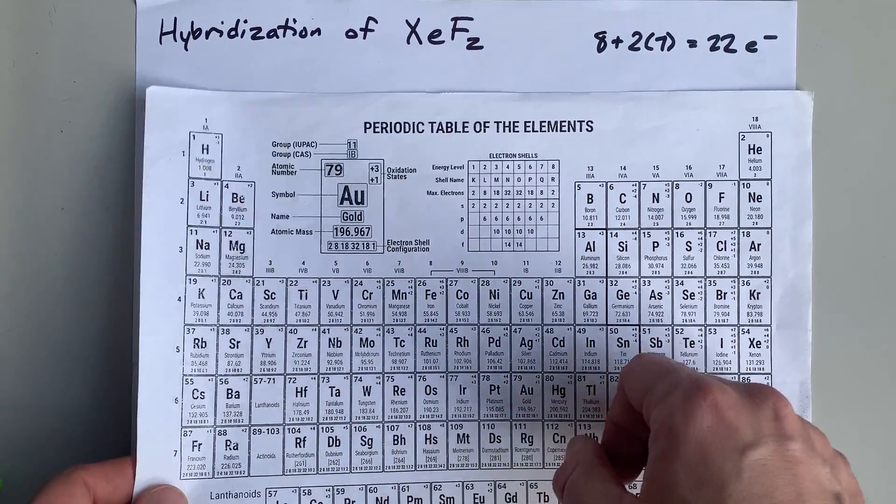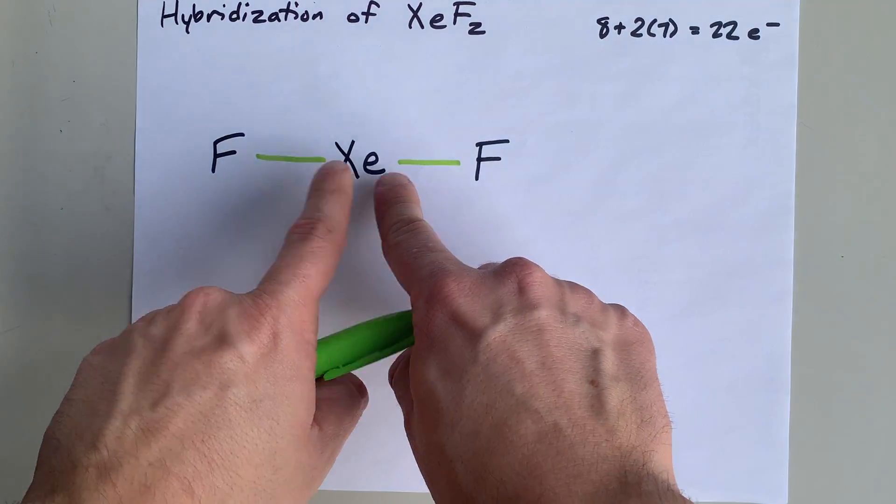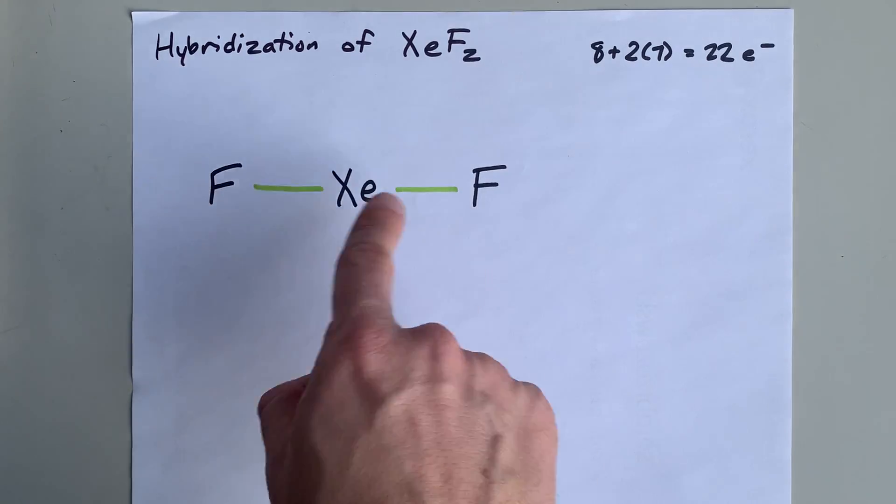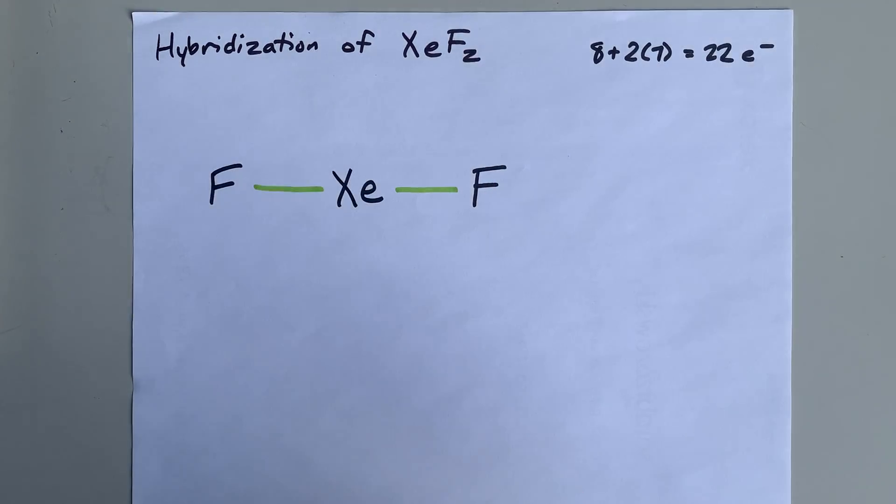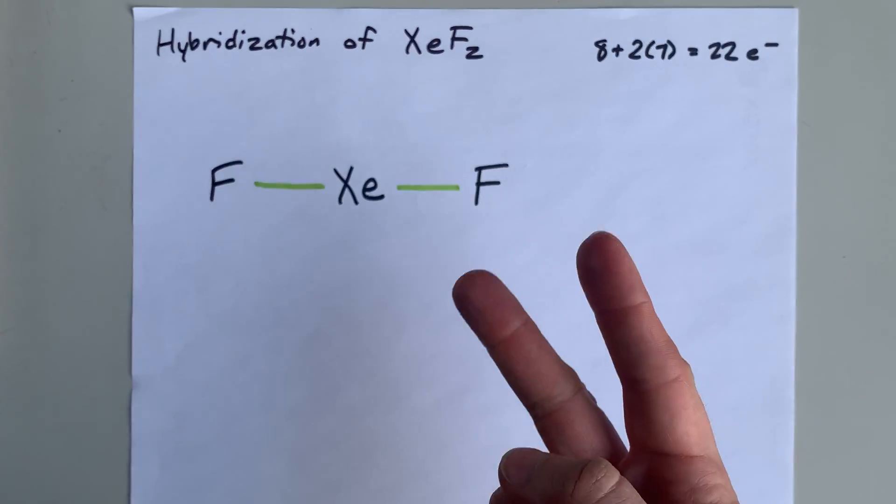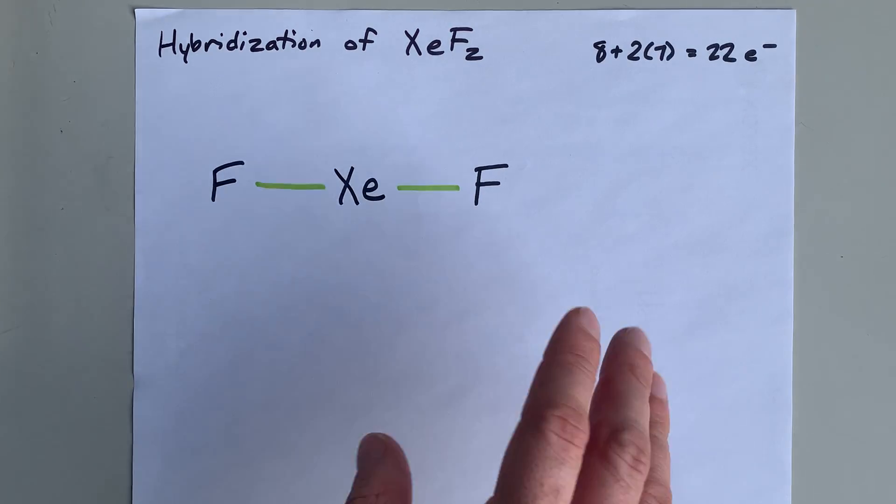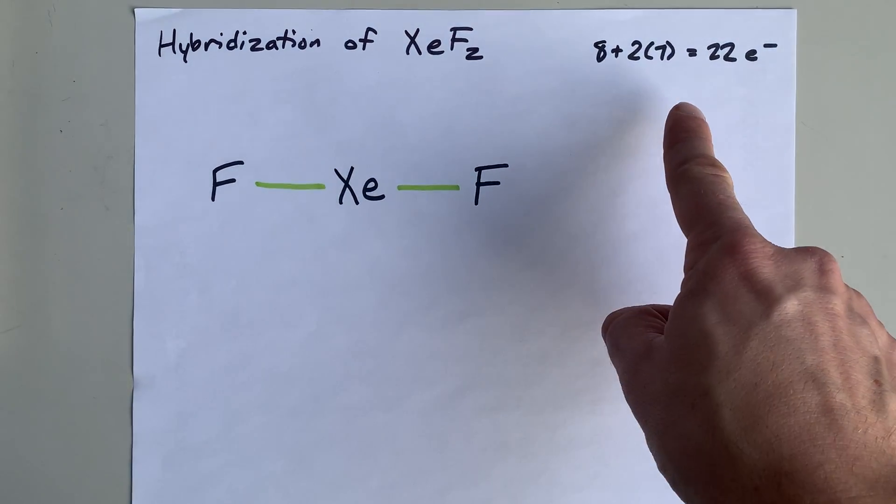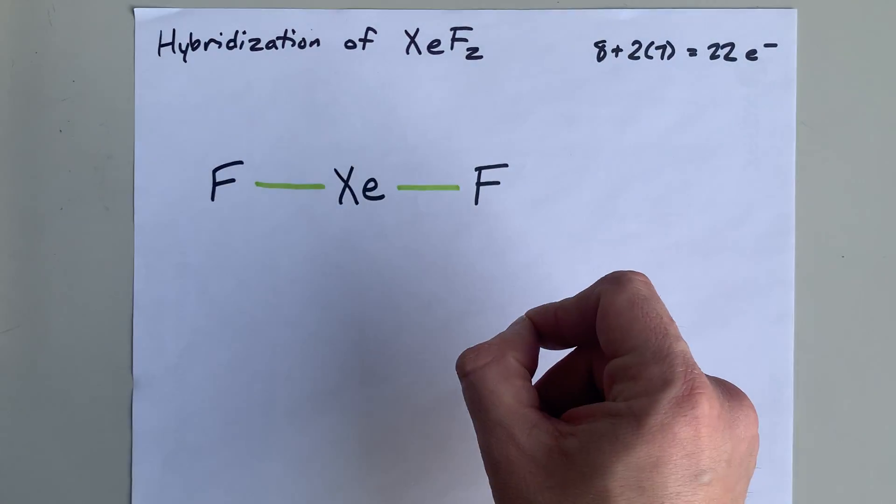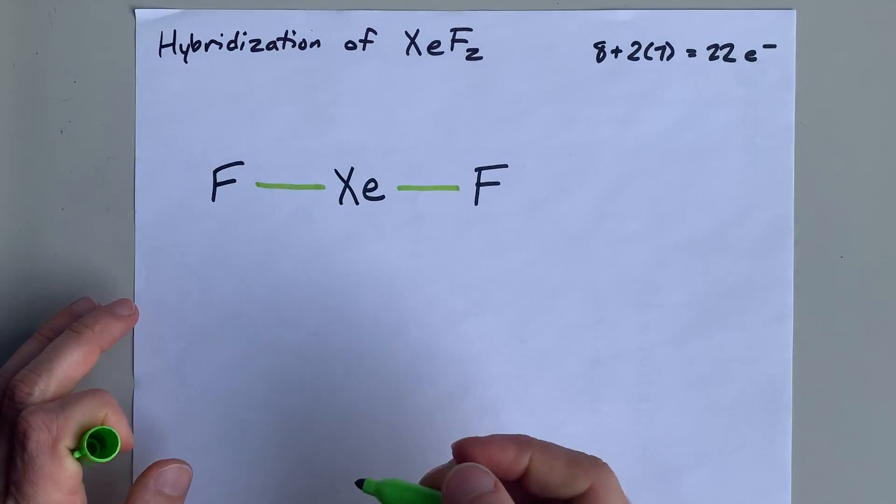The way I draw Lewis structures is to put one atom in the center and the outer atoms surrounding it. Then I connect the central atom with each of the outer atoms to hold them into a single molecule. Each of these single bonds represents two electrons. So I have four electrons total so far. I need 22. So I'm going to fill the octets of the outer atoms until I get to 22 electrons, or until I run out of outer atoms.